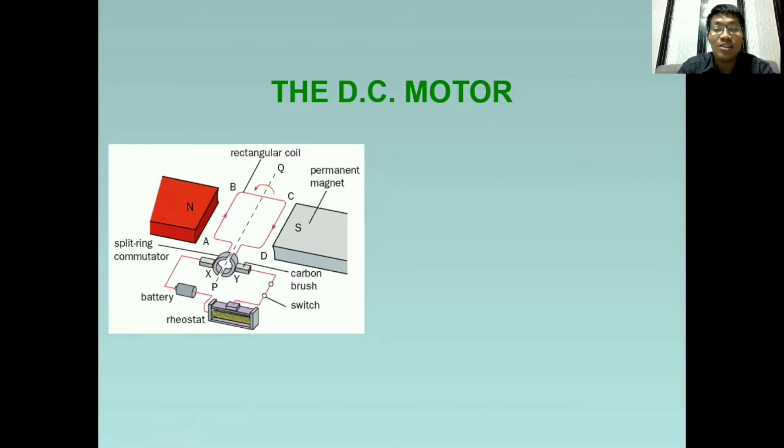Later, we will explain. Pero paano nga ba gumagana ang isang DC motor? In this illustration, pinapakita na ang movement ng rectangular coil ay counterclockwise. Eh sir, bakit po naging counterclockwise? So as we analyze it and as we apply the Fleming's left-hand rule, AB side is having a downward force while the CD side will have an upward force. So the movement is counterclockwise.